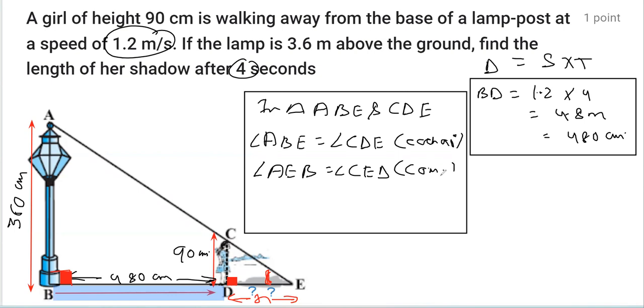So when we prove these two angles equal, we can straight away write the triangles are similar: triangle ABE is similar to triangle CDE.